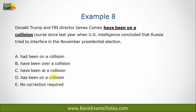Example 8: 'Donald Trump and FBI director James Comey have been on a collision course since last year when the US intelligence concluded that Russia tried to interfere in the November presidential election.' The underlined text is 'have been on a collision course.' There is no tense error — 'have been' is correctly used with two subjects. 'Have been on a collision' means they have opposing points of view. Options like 'had been,' 'have been over a collision,' 'have been at a collision,' and 'has been at a collision' are all incorrect. No replacement is needed.